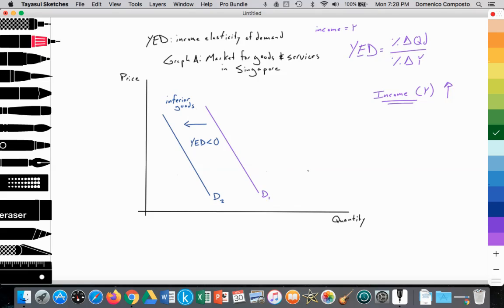How about demand for normal goods that are necessities? Quality food, quality health care, quality housing. As income rises, demand for that starts to increase. So it shifts out from D1 to D3. And this is a necessity that's a normal good. YED in this case is less than one but greater than zero. So this is a necessity that is a normal good. Necessity goods and services.